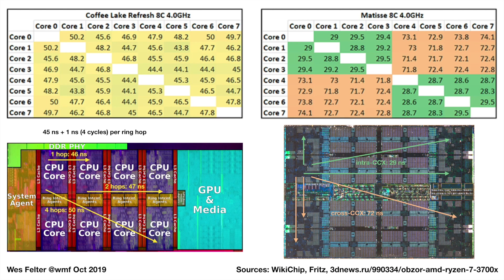Here's some measurements of core-to-core communication latency on Intel Coffee Lake Refresh, aka the 9900K, on the left, and Zen 2 Matisse, aka the Ryzen 3700X, on the right. For Intel, you can see the latency is relatively consistent at 45 to 50 nanoseconds. The variation is probably due to the ring bus, where some cores are up to 4 hops away, but each hop is only 1 nanosecond. The Coffee Lake here was underclocked to 4 GHz, so in reality the latency may be lower.